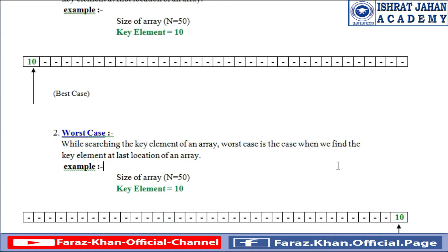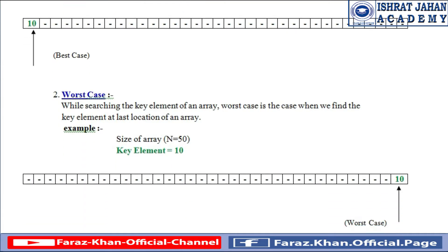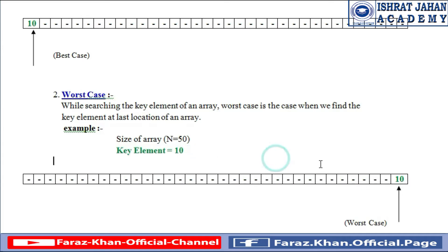Let me elaborate. For example, we have the same array of size n equal to 50 and the element we are going to find is again 10. If we find that element at the very last index of the array, we will call it a worst case.